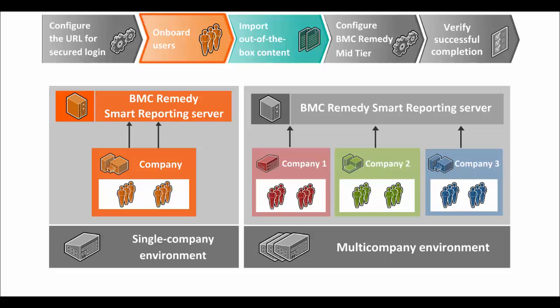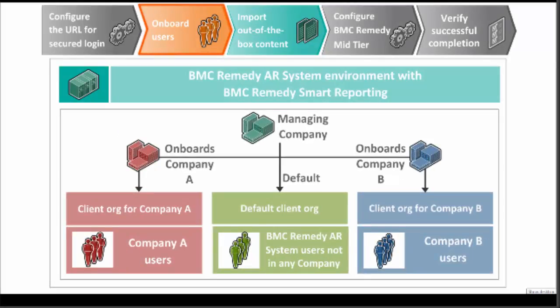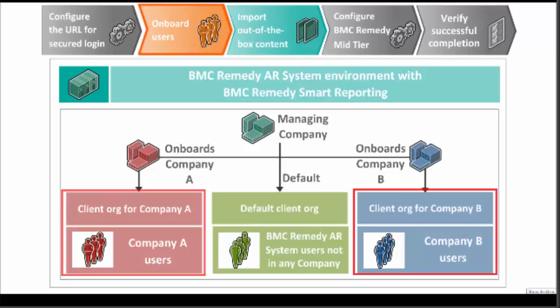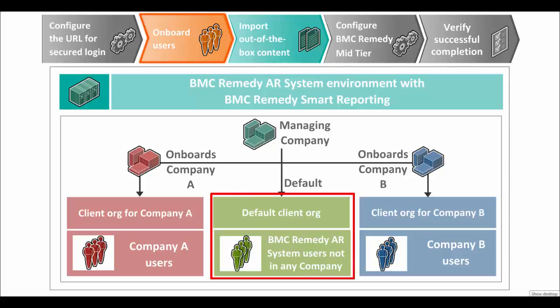In a multi-company environment, you now have the option to perform user onboarding one company at a time or in bulk. The onboarding process includes user creation filter criteria, which is an inbuilt filter that imports only those users that have a fixed or floating license type and current status. In addition, you can apply the AR system group filter to import users from specific AR groups except from the computed group. At the end of user onboarding, in single and multi-company environments, a single data source is created for the BMC Remedy Smart Reporting instance. A Smart Reporting Client Org is created for each company that is onboarded, and users from all companies are imported to their respective client orgs. In multi-company user onboarding, an additional default client org is created, and users who do not belong to any specific company are added to the default client org.